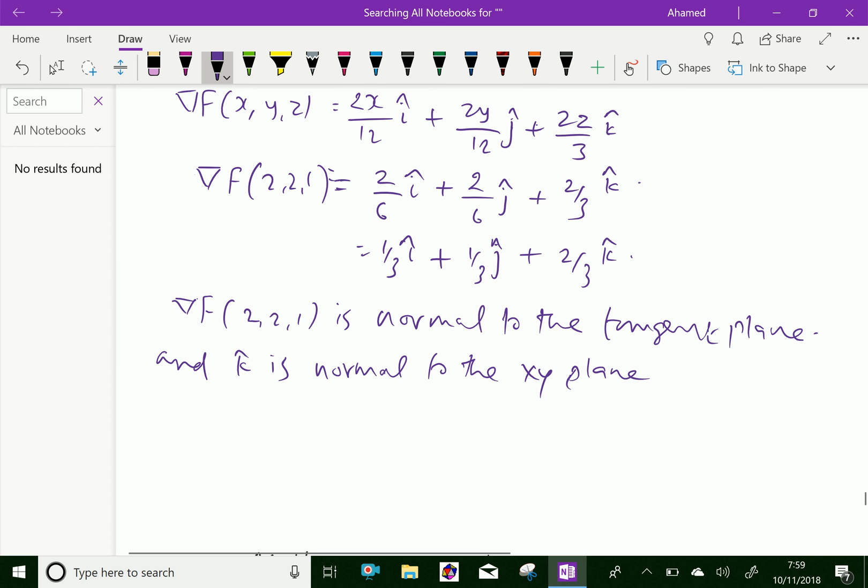That is angle of inclination given as cos theta equals gradient of F at (2, 2, 1) dot k vector over modulus of gradient F at (2, 2, 1).